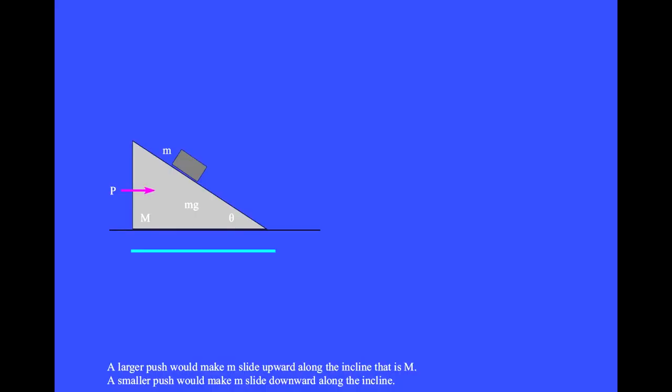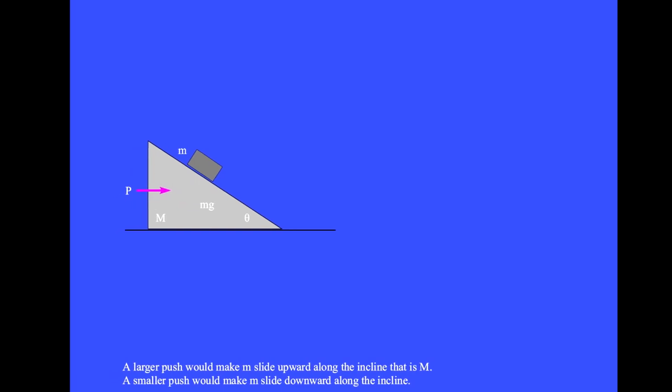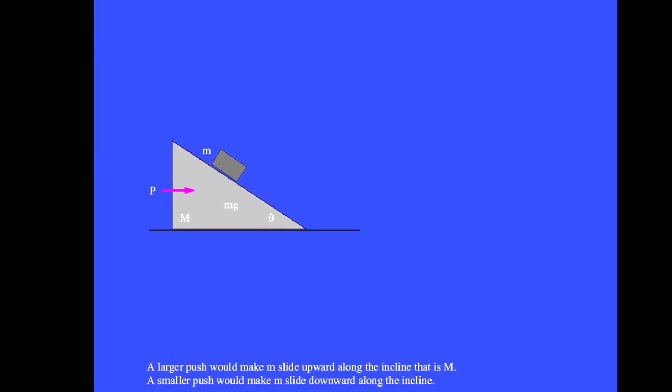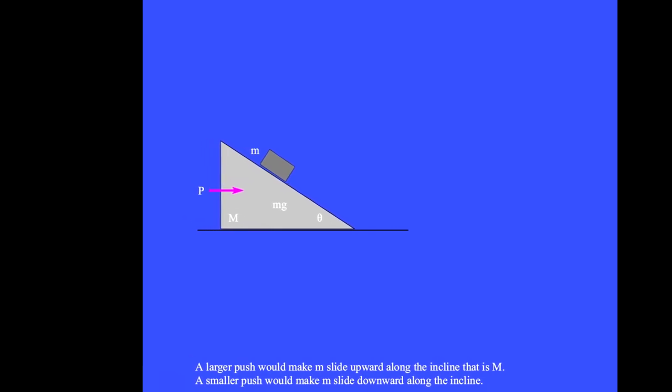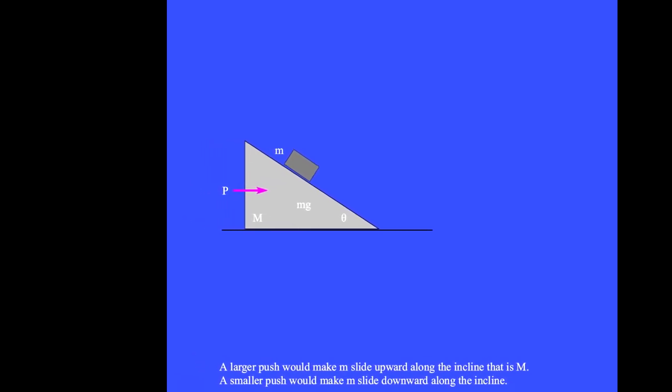Mass big M slides along a frictionless floor. Mass little m slides along the frictionless surface of big M. If big M is bolted in place, little m would simply slide down the incline. Force P pushes big M to the right, causing both masses to accelerate rightward. When the push P is just right, mass little m does not move along the incline.